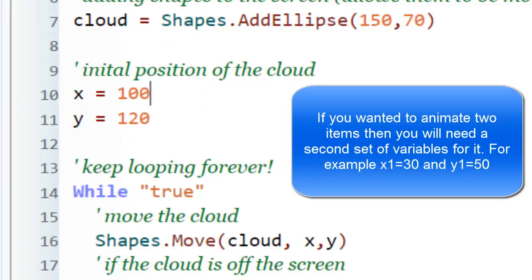The next part, lines 10 and 11, shows the position of the cloud initially. Initially it's at position 100 by 120. The X and Y position on the screen is essentially the top left-hand corner of the cloud.